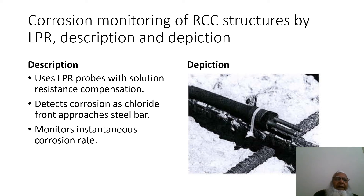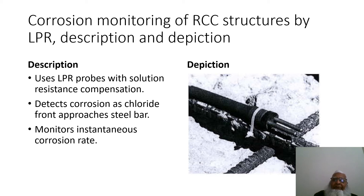Corrosion monitoring of RCC structures by LPR technique uses LPR probes with solution resistance compensation to detect corrosion as the chloride front approaches the steel bars, monitoring the instantaneous corrosion rate. The picture on the right shows how the LPR probe has been installed along the rebars in the RCC structures.